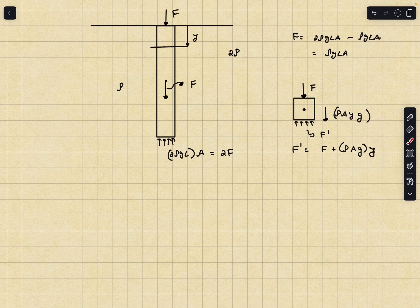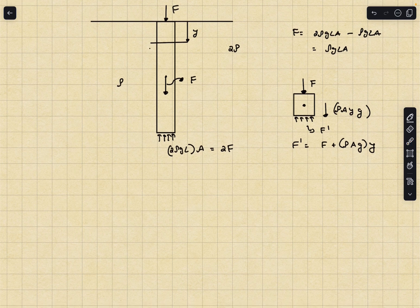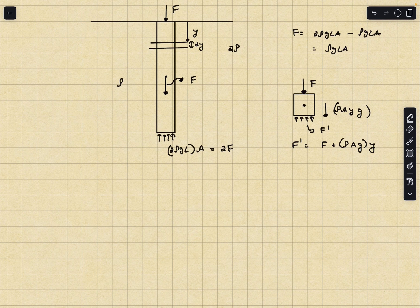We'll do a force balance equation. So I can get F dash equals F plus rho AG times y. As you can see the internal compressive force increases in magnitude as we go down and it's a maximum at y equal to L. Its value is going to be 2F.